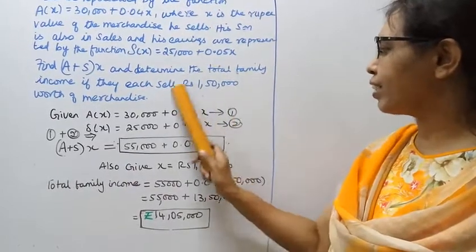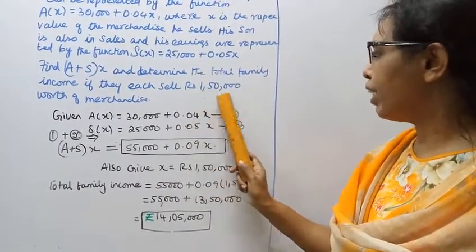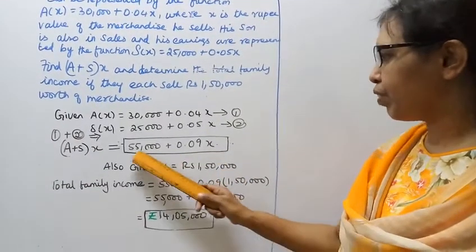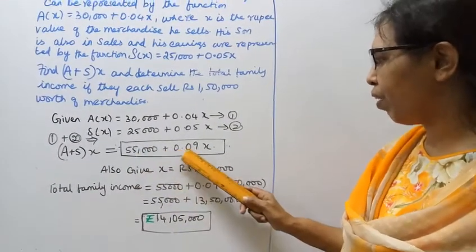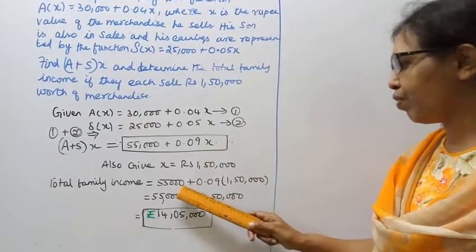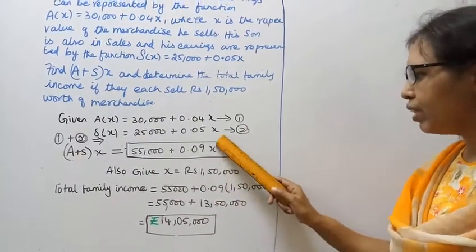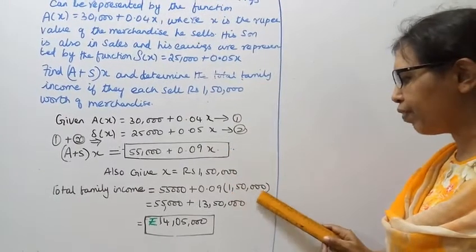Given x = Rs. 1,50,000, so (A+S)(x) = 55,000 + 0.09(1,50,000) = 55,000 + 13,500